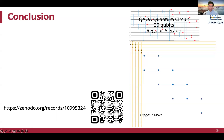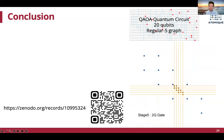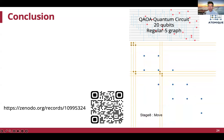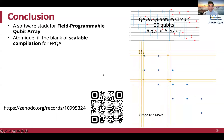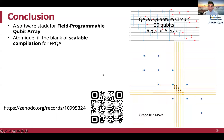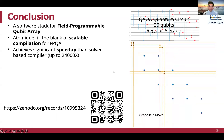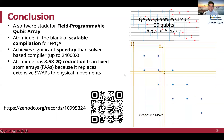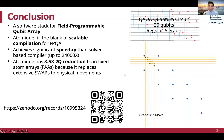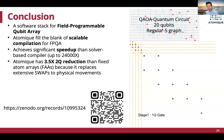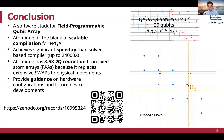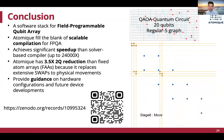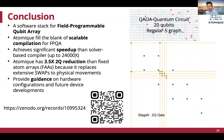In conclusion, we propose Atomic, a software stack for FPQA devices. It fills the gap of scalable compilation for this emerging architecture. It also achieves scaling speedup over the solver-based method and scales to thousands of qubits. Additionally, it achieves 3.5x two-qubit gate reduction compared to fixed atom arrays. The analysis results from our compiler also provide important guidance for hardware configurations and future device development. We open-source our framework at this link, which can generate animations to help understand the compilation intuitively. Welcome to play with it.